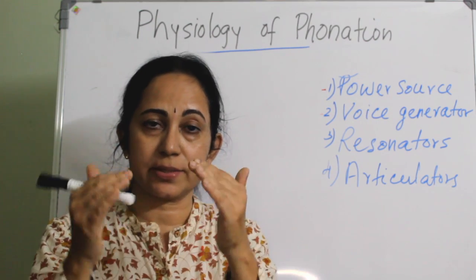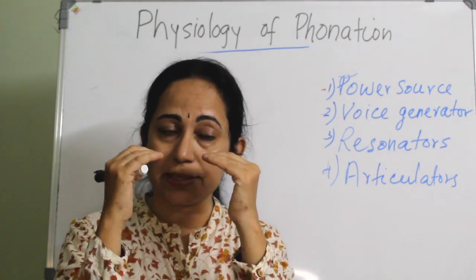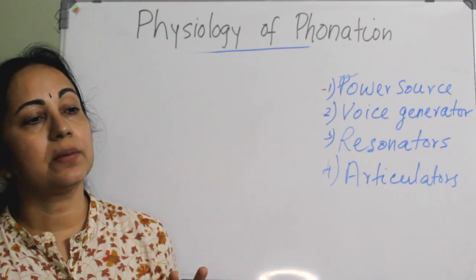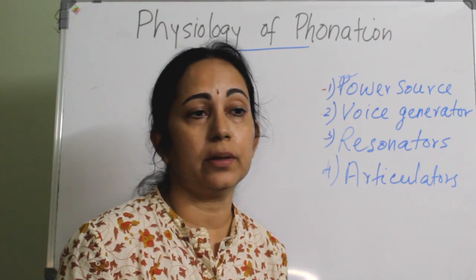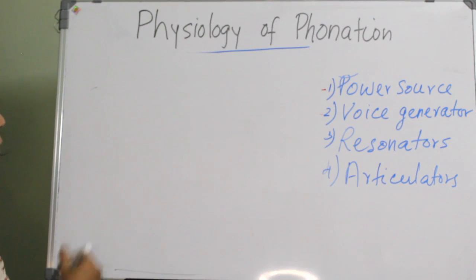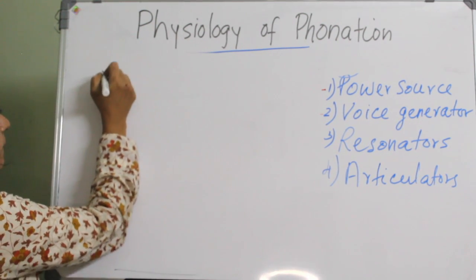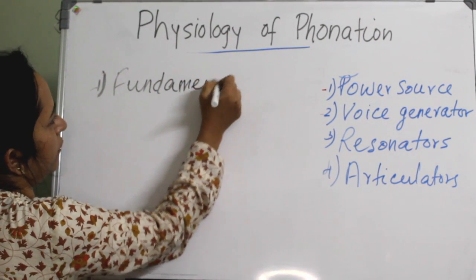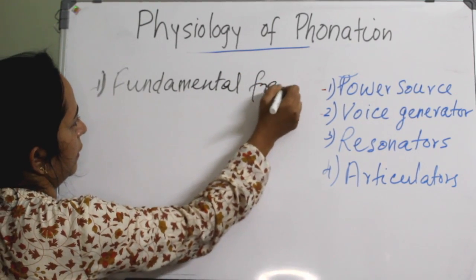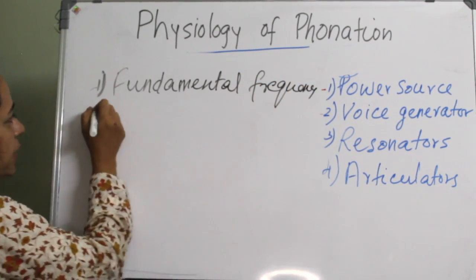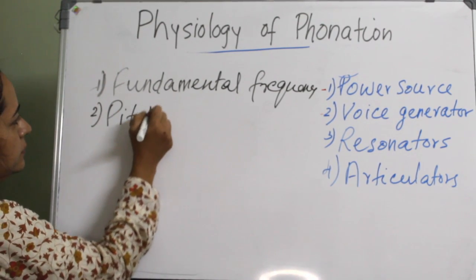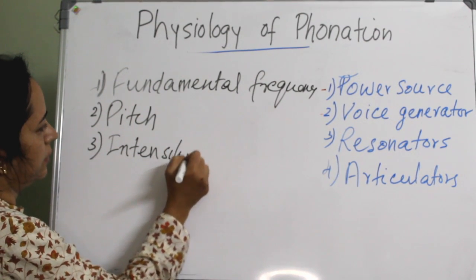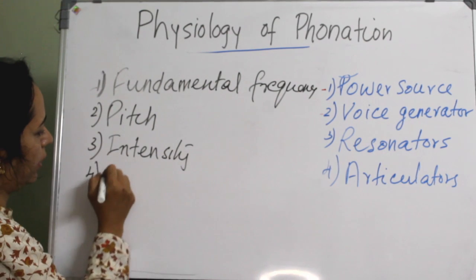For a good or normal voice, both vocal folds should be structurally and functionally symmetrical, at the same level, and should close rapidly according to the vibratory cycle. You need to know four terminologies: fundamental frequency, pitch, intensity of voice, and vocal registers.